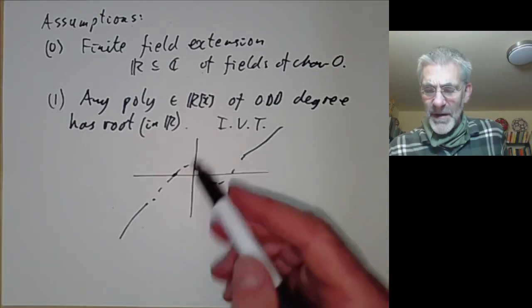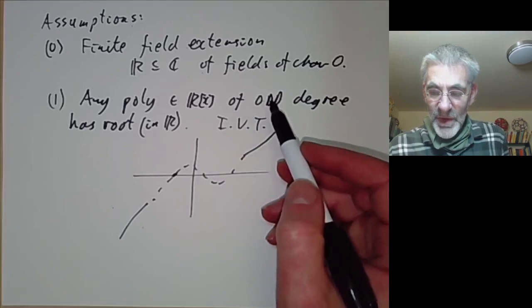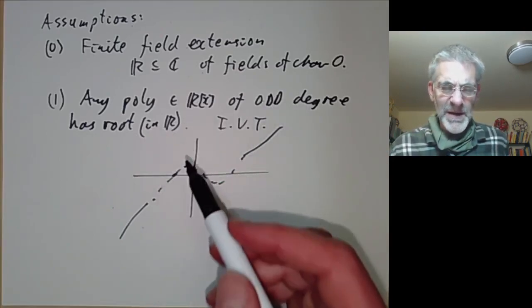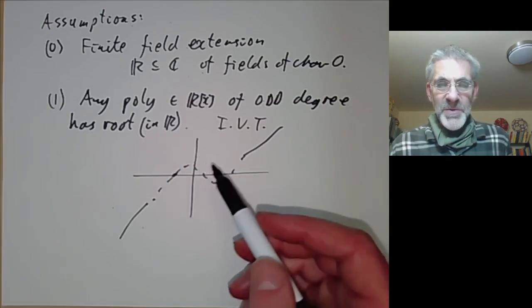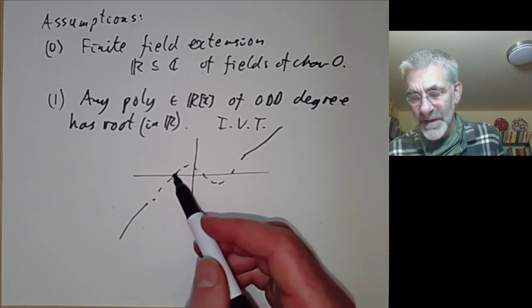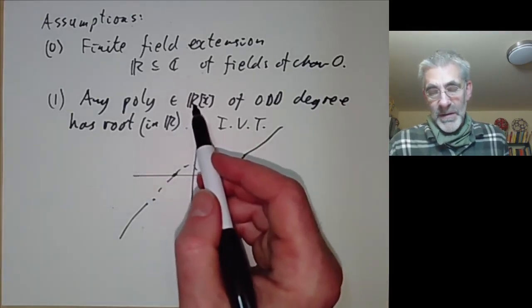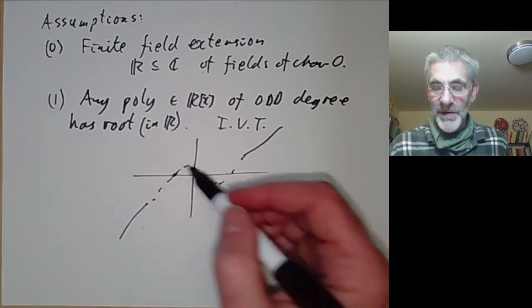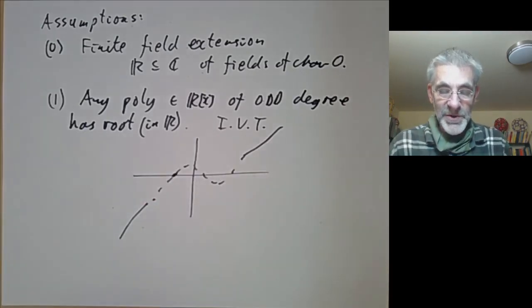Notice that this part of saying a polynomial of odd degree must have a root is not really algebraic. You need to use the completeness of the real numbers in order to prove the existence of a root. For instance, if you do this for the rational numbers, it's simply not true. A polynomial of odd degree over the rationals doesn't necessarily have a rational root.